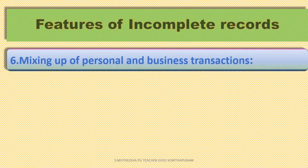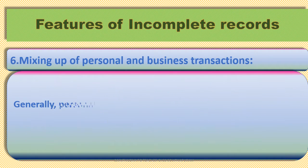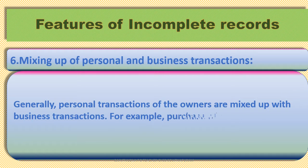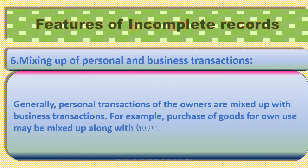Sixth feature — Mixing up of personal and business transactions. Generally, personal transactions of owners are mixed up with business transactions in incomplete records. For example, if the owner purchased goods for his own use, these expenses may be mixed up along with the business purchases.